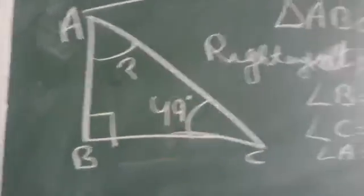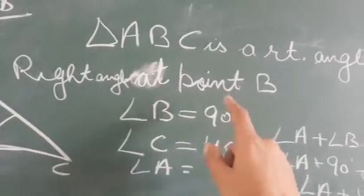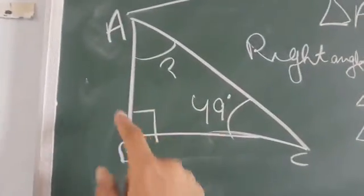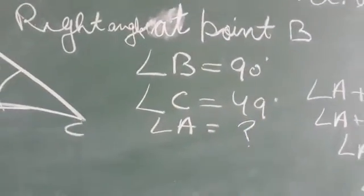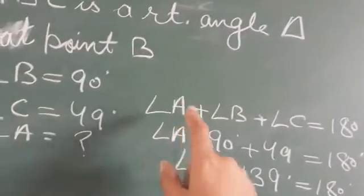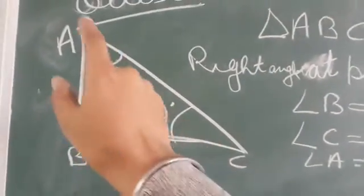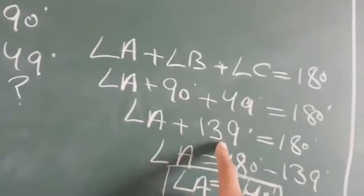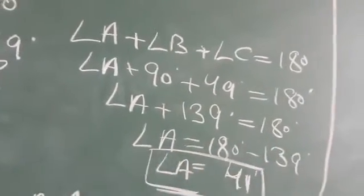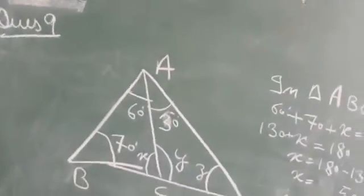Triangle ABC is a right angle triangle, right angle at point B। B = 90 degree, C = 49 degree, A हमको find out करना है। Angle A + B + C = 180 degree जैसे कि हमको पता है triangle के 3 angles का sum 180 होता है। A + 90 + 49 = 180 degree। 90 + 49 = 139, जब दूसरी side जाएगा minus करेंगे, angle A = 41 degree।